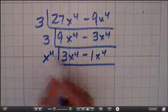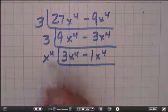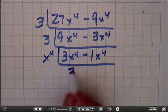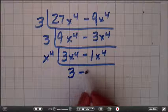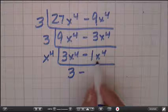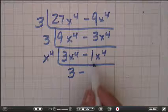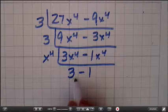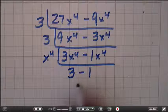Well, yeah, it's x to the 4th. So when I take 3x to the 4th divided by x to the 4th, I get 3. And when I take negative 1x to the 4th divided by x to the 4th, I get 1. And 3 minus 1 is what? It's 2.